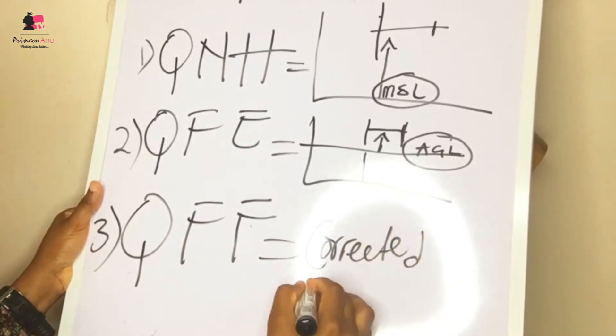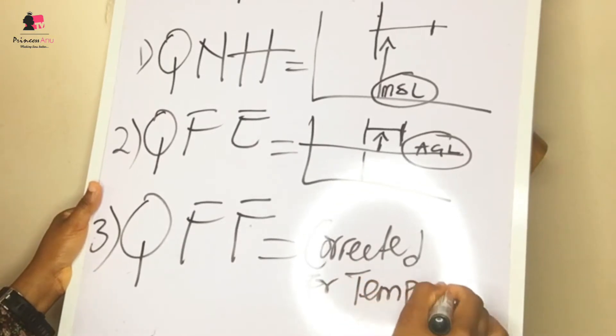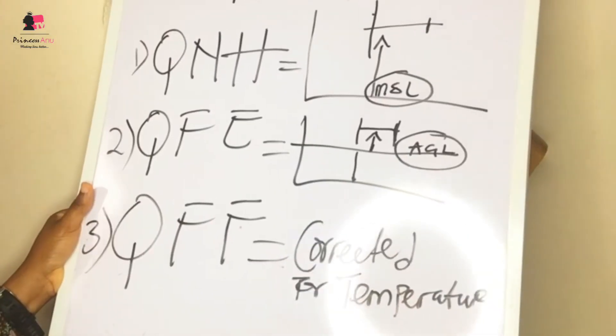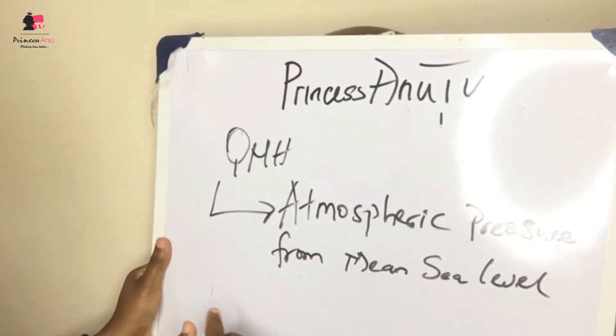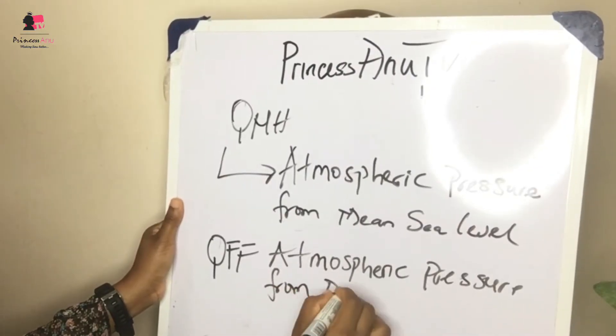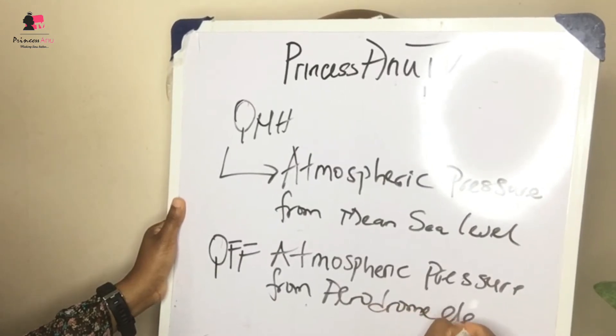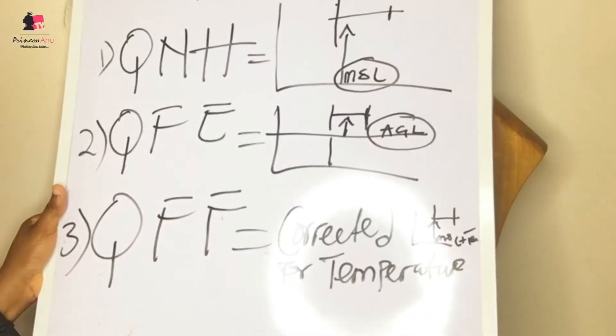These are the three things to remember, especially for theory exams taken by engineers, flight operations personnel, and air traffic controllers. QNH is atmospheric pressure from mean sea level. QFE is atmospheric pressure from aerodrome elevation, which generally reads zero feet when the aircraft is on the ground. QFF is atmospheric pressure from mean sea level corrected for temperature. Don't mix these up — in exams it can cost you marks, and when flying, mixing them up can cause a disaster.